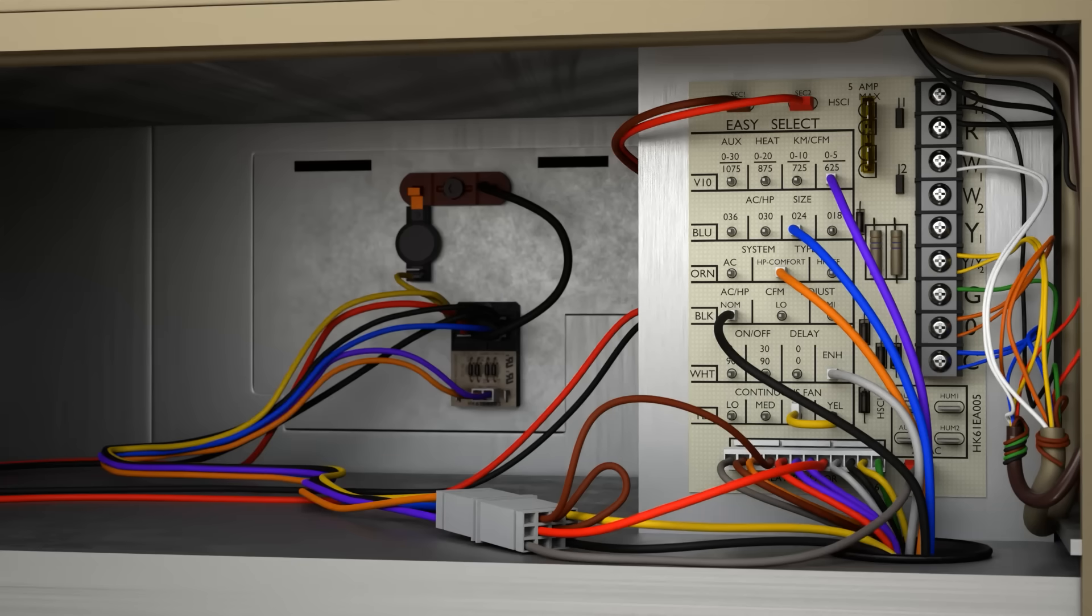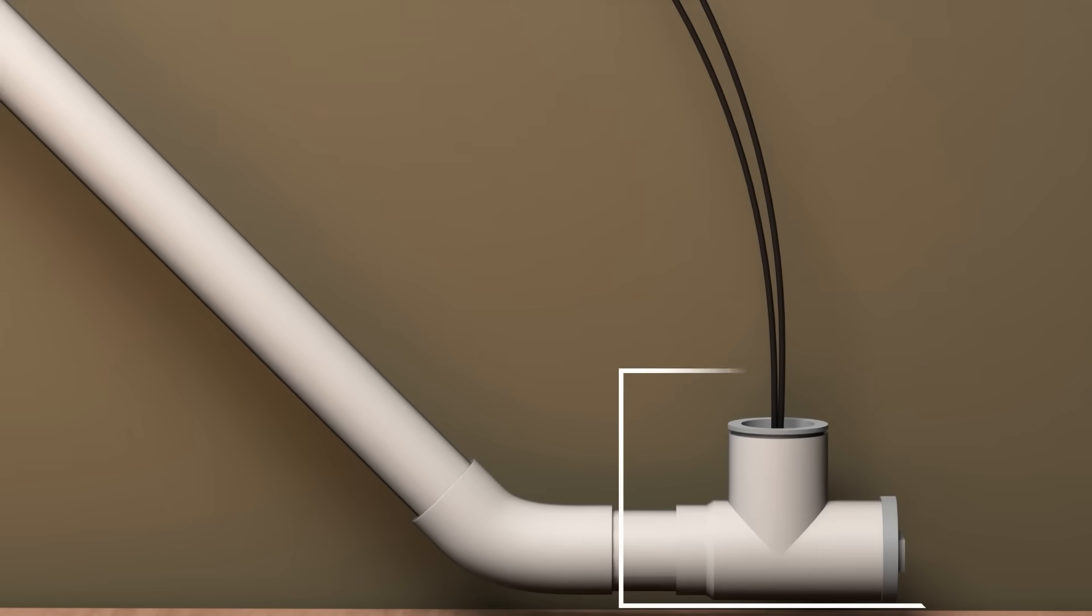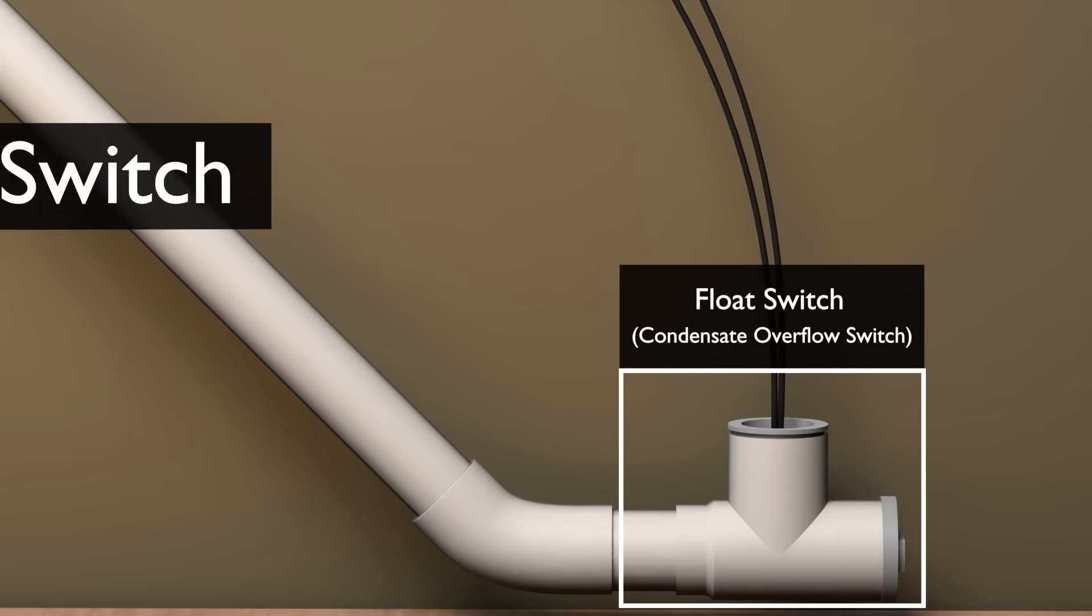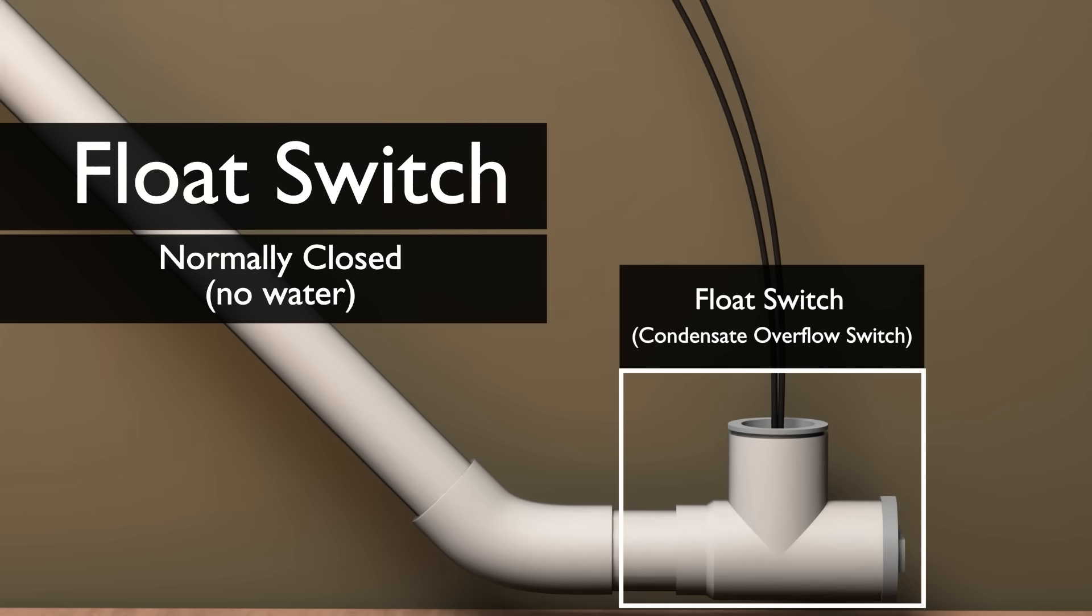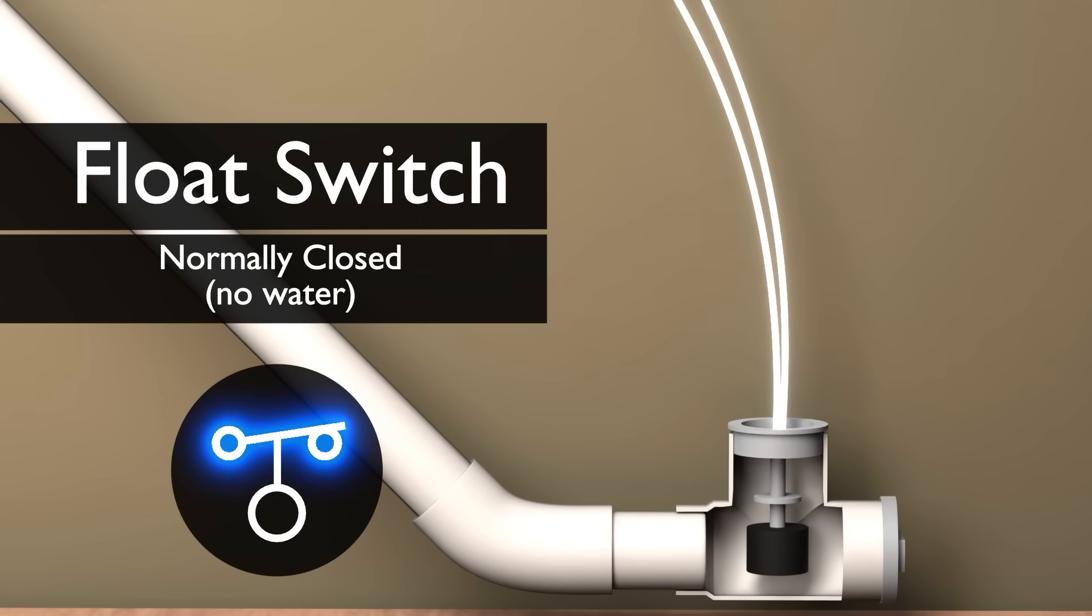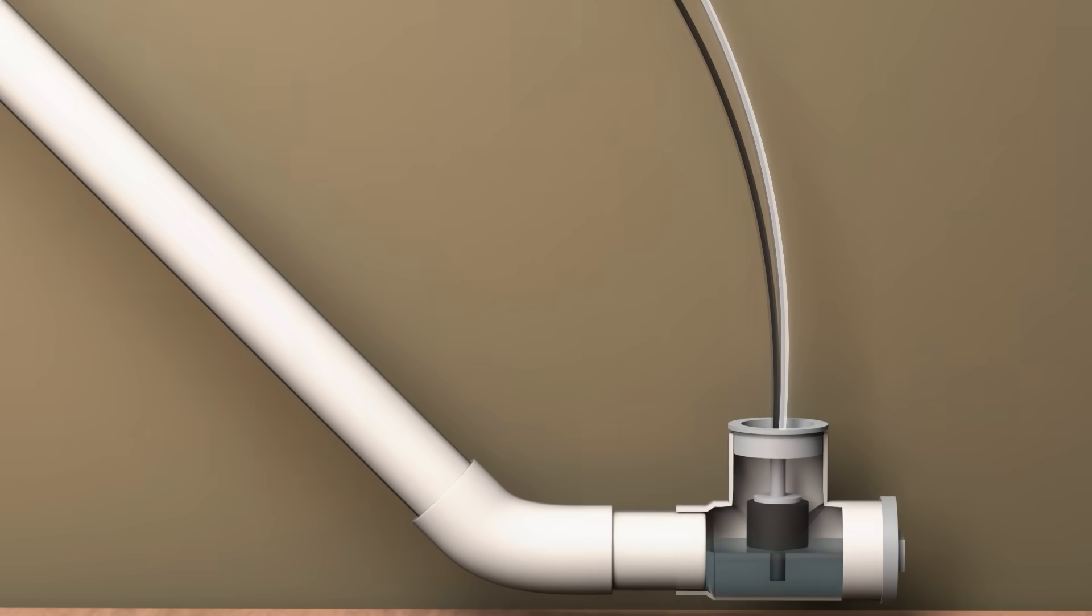A common component in a residential air conditioning system is the float switch or the condensate overflow switch. These switches are normally closed. When they fill with water, the switch opens, which breaks the circuit and shuts off the system.